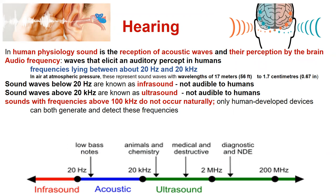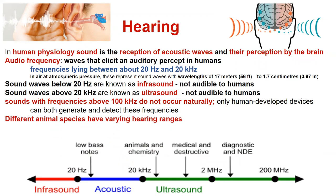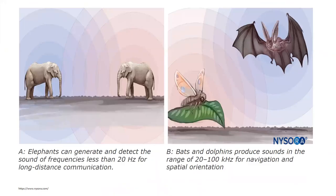Both infrasound and ultrasound are not audible to humans. Sound waves with frequencies above 100 kHz do not occur naturally; only human-developed devices can generate and detect these frequencies. Different animal species have varying hearing ranges — elephants can generate and detect frequencies less than 20 Hz for long-distance communication, and bats and dolphins can produce sounds in the range of 20 to 100 kHz for navigation and spatial orientation.